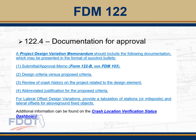These items were included in the previous bulletin, but a project design variation memorandum should include the following: Form F122B, the submittal approval memo; the design criteria versus the proposed; a review of crash history on the project related to the design element, typically five years from the current date; and an abbreviated justification for the proposed criteria. This does not have to be an exhaustive discussion — typically a paragraph should be able to cover these four items. As in previous years, for lateral offset design variations, include the table of stations for above-ground fixed objects that don't meet clear zone or lateral offset.